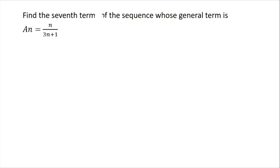And to do that, let's try to solve by using this general term, a sub n is equal to n all over 3n plus 1. So substitute your n to 7, because 7 is the position of the term that we are looking for.